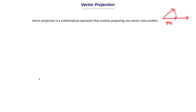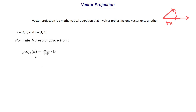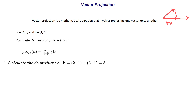Let's take an example of vector projection. Say we have two vectors: a = 2, 3 and b = 1, 1. The formula for the projection of b onto a is: (a·b / |b|²) · b. First we calculate the dot product a·b: we multiply 2×1 plus 3×1, which equals 5. Then we calculate the magnitude of b: square root of (1² + 1²) = √2. We square it to get 2, and the square root cancels out.